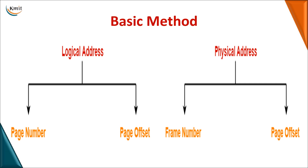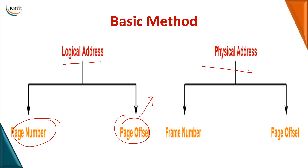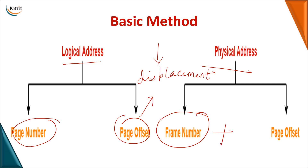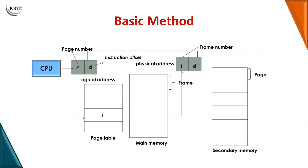In the basic method of paging we must be clear about two addresses. The logical address, related to secondary memory, has two parts: the page number and the page offset, where the offset represents displacement — how many bytes from the current location. Similarly, the physical address, related to main memory, consists of a frame number plus an offset. The CPU generates a logical address as a combination of page number and displacement.